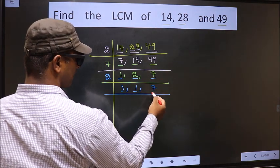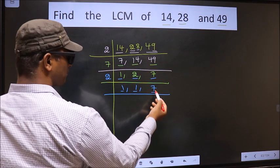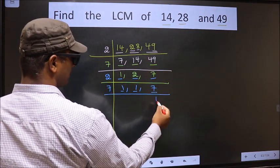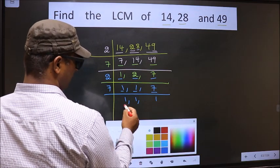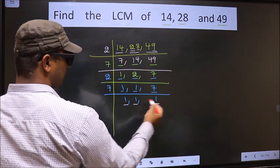We got 1 here and here. So focus on the other number, that is 7. 7 is a prime number, so we take 7, 1 is 7. We got 1 in all the 3 places.